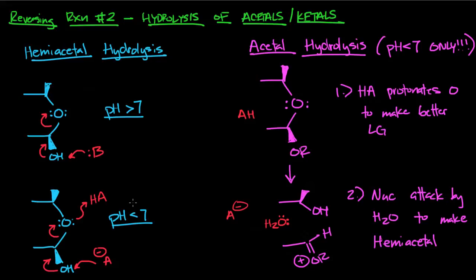With acetal hydrolysis, one important thing to remember is that this only happens at pH less than 7. At pH 7 or greater, acetals are going to be pretty stable functional groups and they're not going to hydrolyze. The reason behind this is: look back at the hemiacetal mechanism — the base has to pluck off a hydrogen to facilitate pushing those electrons, which pushes out the oxygen. There's no hydrogen on an acetal for the base to act on.